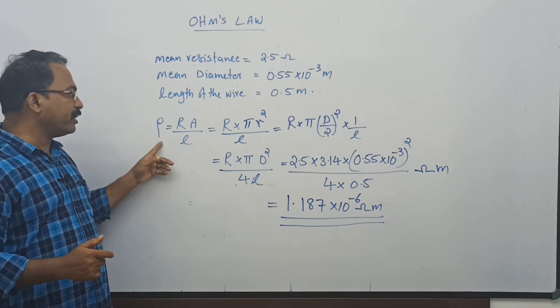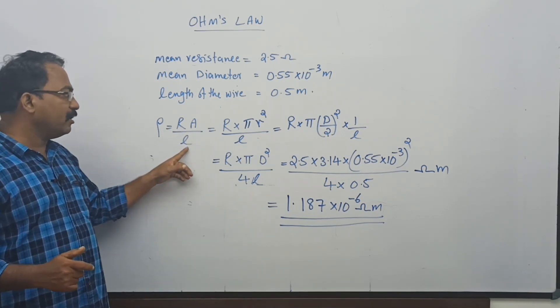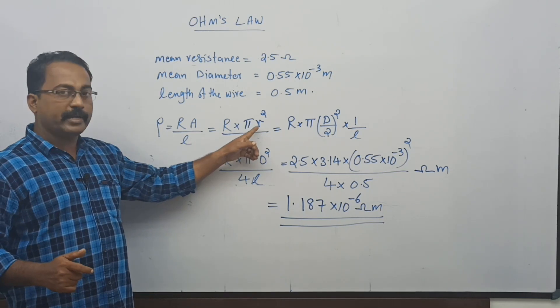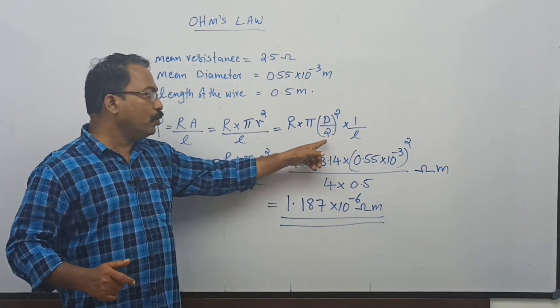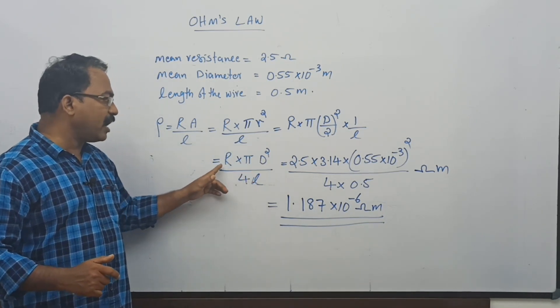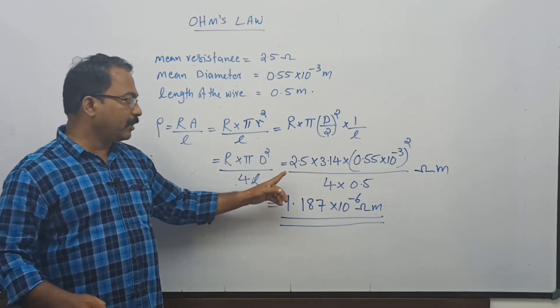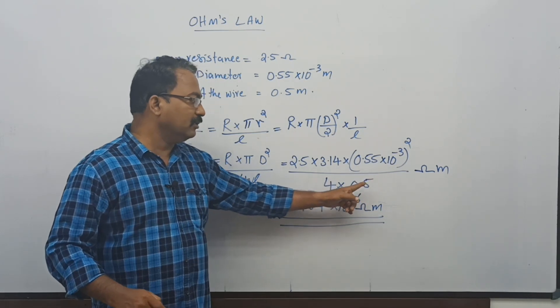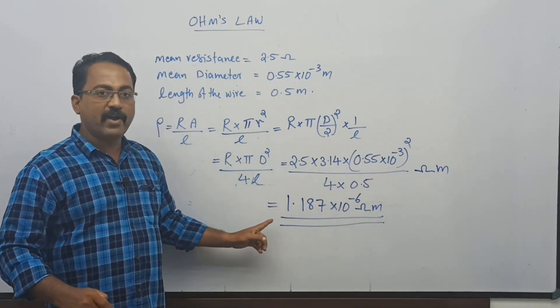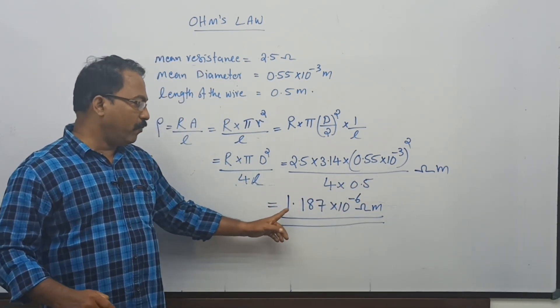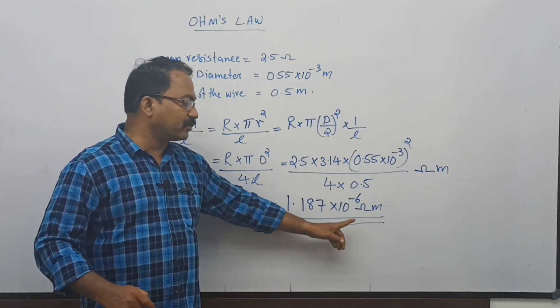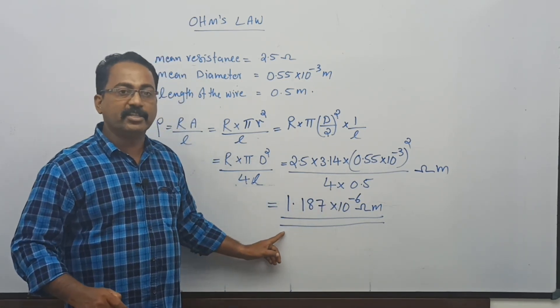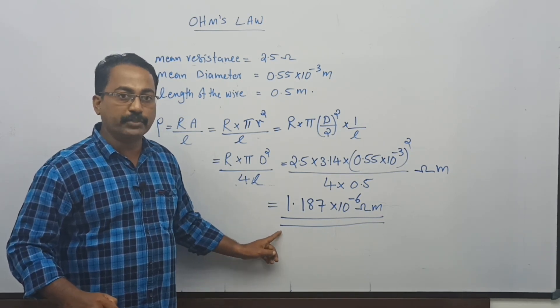Our equation for resistivity is ρ = RA/L. Area = πR² but radius = diameter/2. So we got the equation R × πD²/4L. We substituted the values and got the final answer as 1.187 × 10^-6 ohm meter. This is the resistivity of the material of the wire we used.